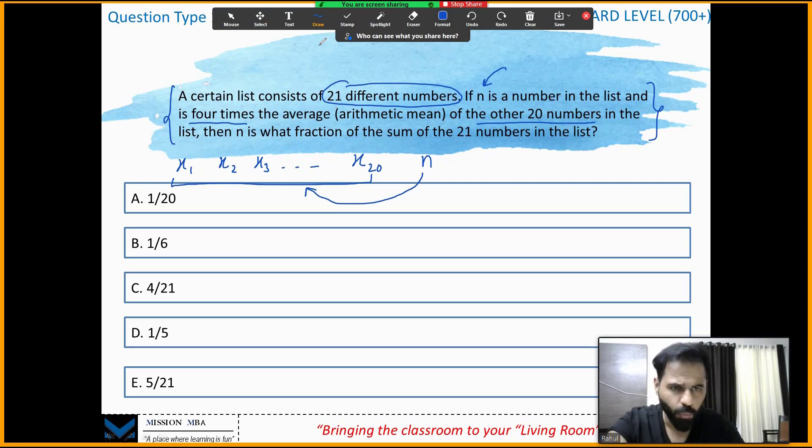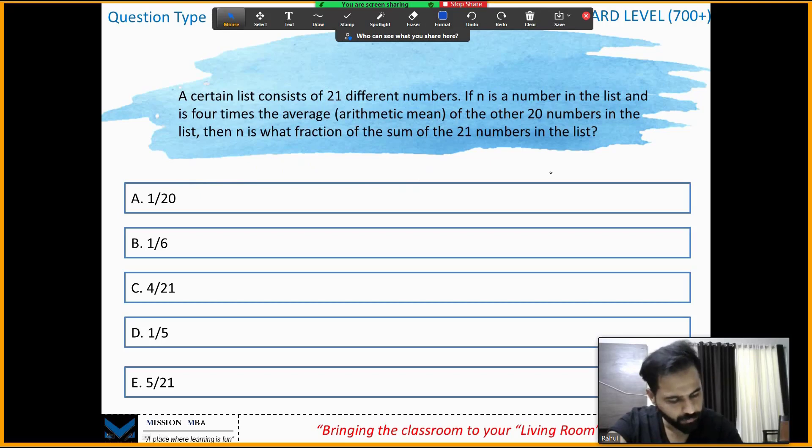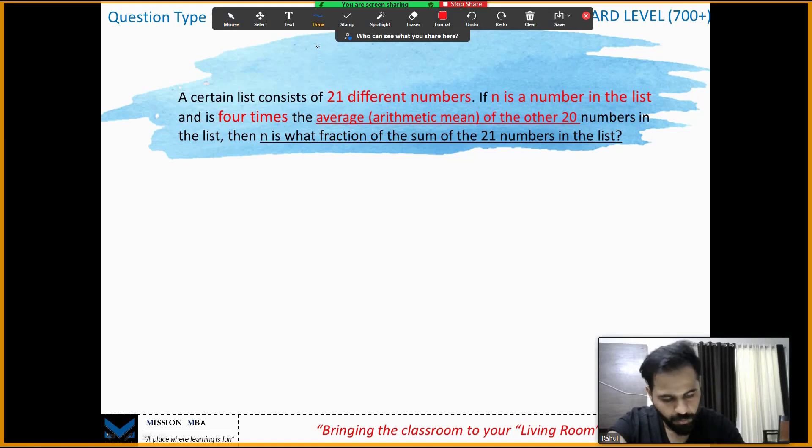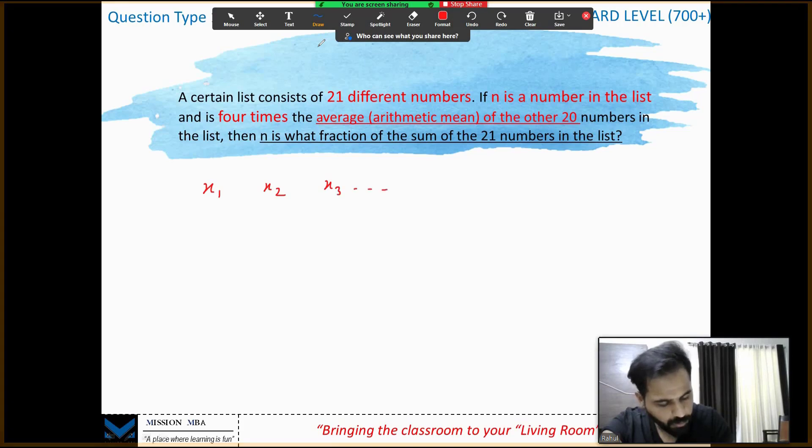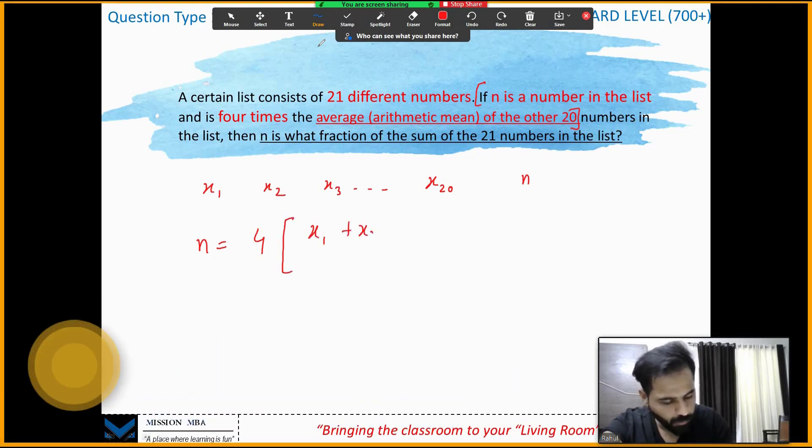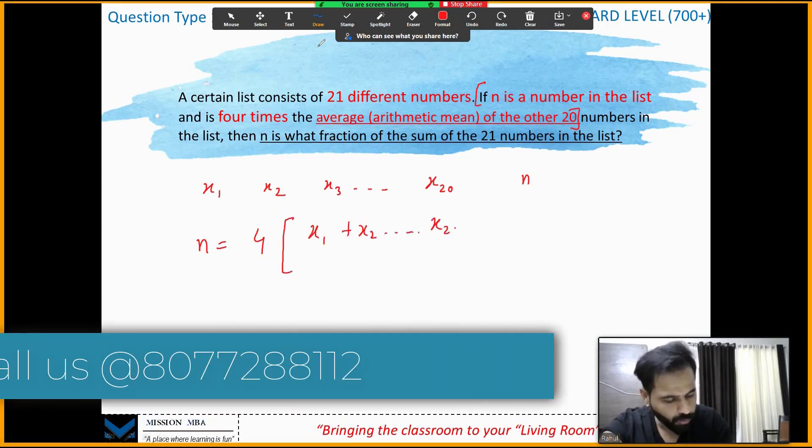Within three lines this will be done. Let's go to the whiteboard. As already told you, my numbers are x₁, x₂, x₃, dot dot dot x₂₀, and n. Now read this line carefully: n is a number which is four times the average of 20 numbers.